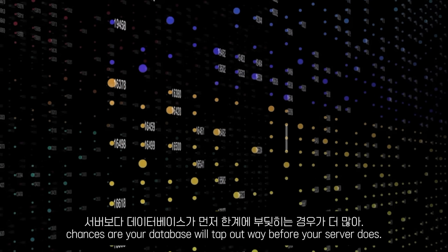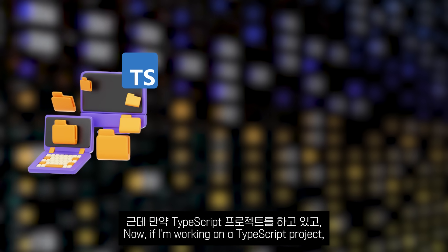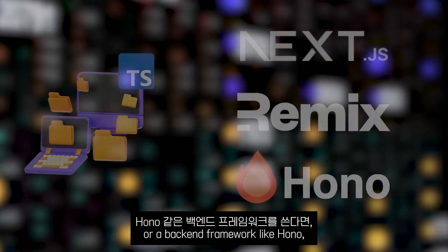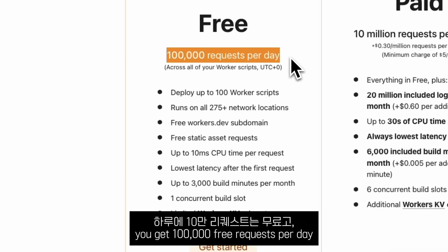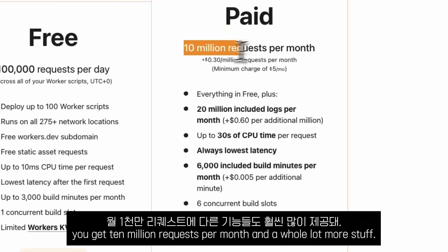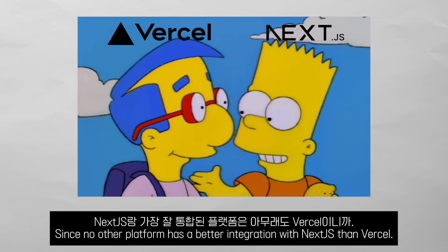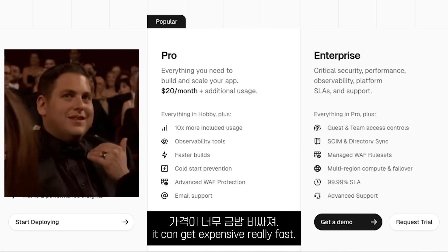And anyway, if you have a ton of users, chances are your database will tap out before your server does. Now, if I am working on a TypeScript project and I'm using a full stack framework like Next.js or Remix, or a backend framework like Hono, I will deploy it to Cloudflare Workers. Nothing can beat Cloudflare's pricing — you get 100,000 free requests per day and unlimited static asset bandwidth. If you upgrade to the paid plan for $5 a month, you get 10 million requests per month and a whole lot more. You could also use Vercel, especially if you are using Next.js, since no other platform has better integration with Next.js than Vercel. But I have never been a fan of their pricing — it can get expensive real fast.